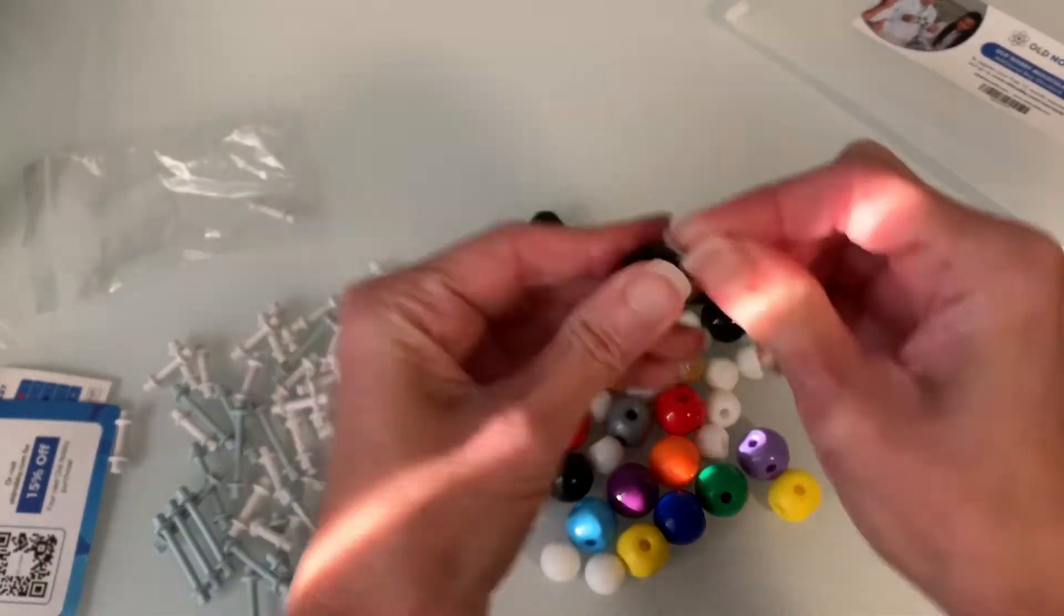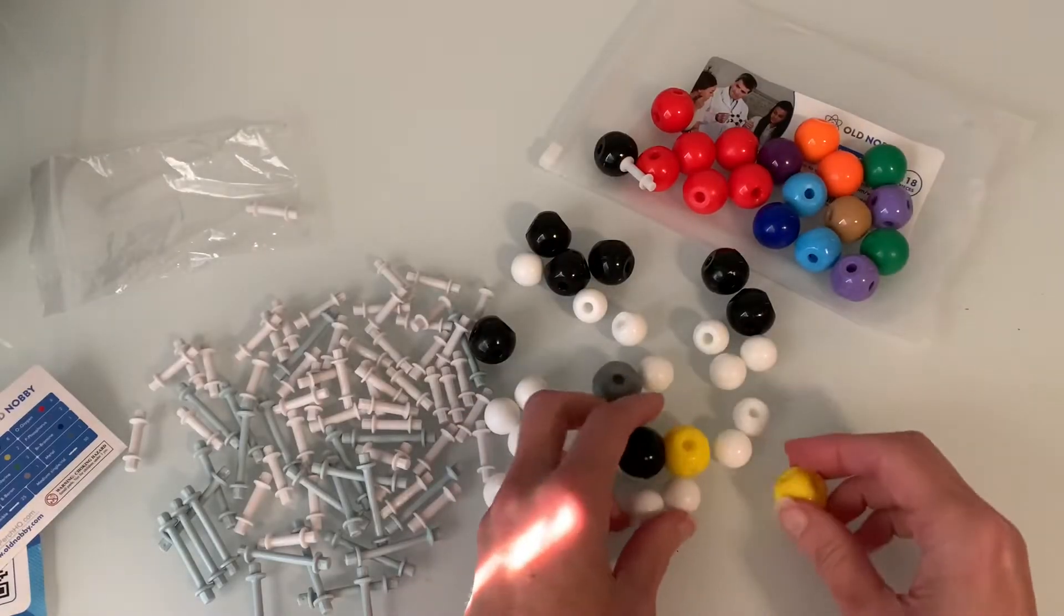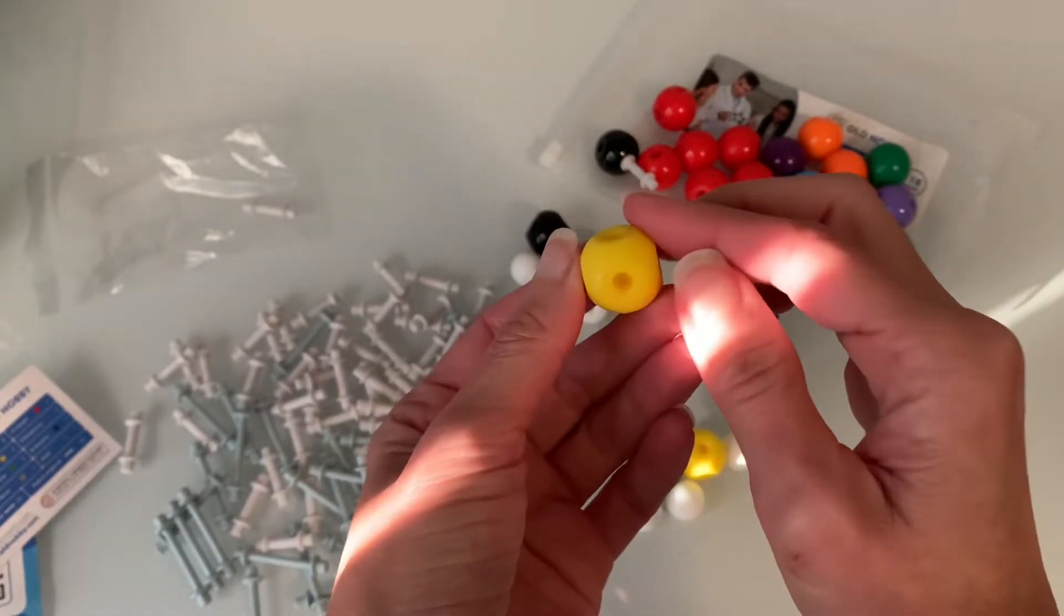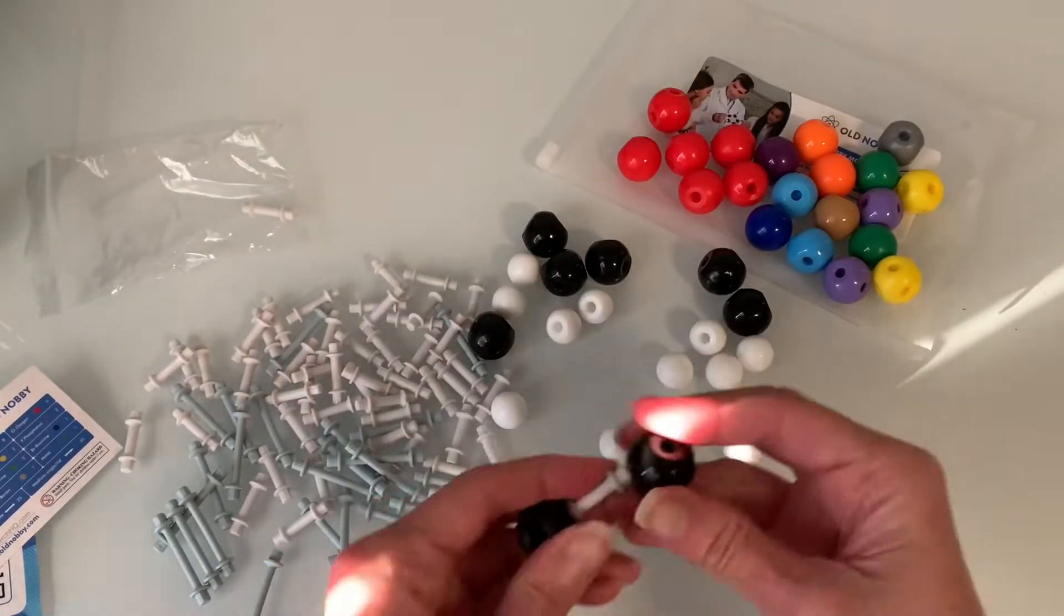It contains all of the atoms that you would need for Gen Chem including atoms that you could use to make octahedral molecules and trigonal planar and trigonal bipyramidal molecules as well.